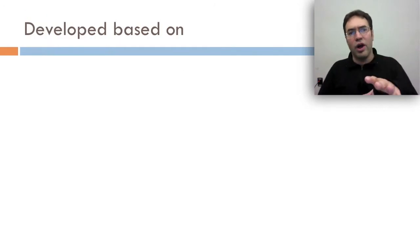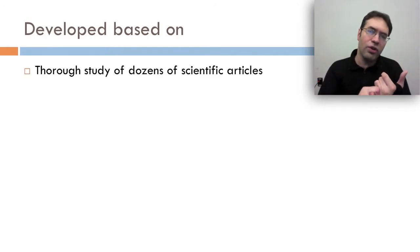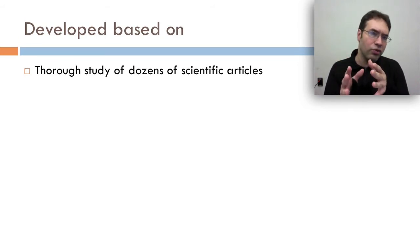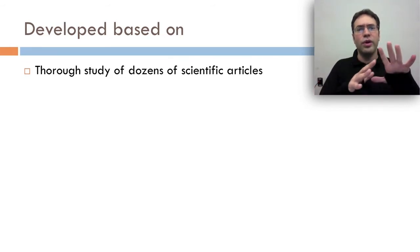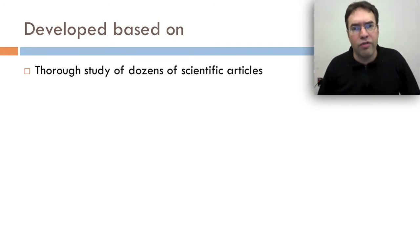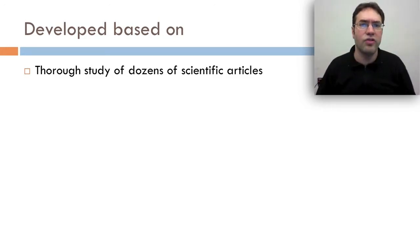This model was developed based on a pretty thorough process. First of all, Aleven and his colleagues did a thorough study of dozens of scientific articles. The resultant review paper, which was published in 2003, a really landmark review in help seeking, reviewed around 300 different articles on how students seek help both in online and offline learning. So Vincent and his colleagues really got a deep understanding of the construct they wanted to model.